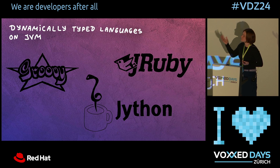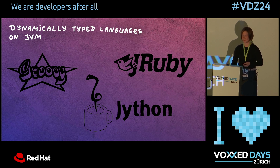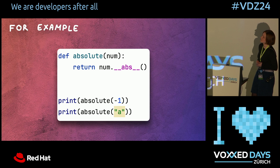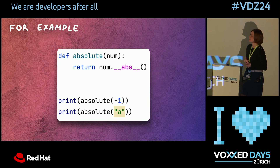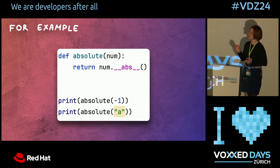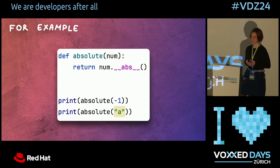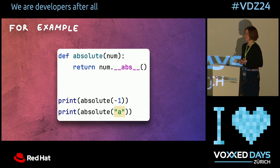It might seem impossible to build a dynamically typed language on top of the JVM, because JVM wants everything checked at compile time. Actually, there are a couple of dynamically typed languages that do run on the JVM. For example, consider a valid piece of Python code: a function 'absolute' that accepts some argument with no types mentioned, assuming num has an abs function. It will be fine for a value like minus one, but for a string value it will crash.